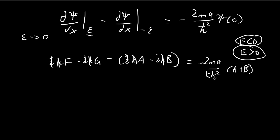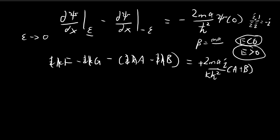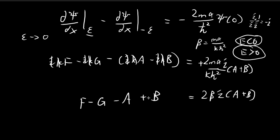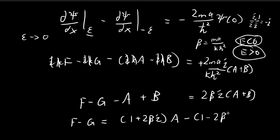Dividing through by k and then by i (noting that 1/i = −i), we define a constant beta equal to m·alpha divided by k·h-bar squared. This simplifies the expression. On the right-hand side we get 2·beta·i times (A + B), and on the left-hand side we have F minus G minus (A minus B). Rearranging and grouping like terms, we arrive at: F minus G = (1 + 2·beta·i)·A minus (1 − ... wait, let me group correctly) — specifically, F minus G equals (1 + 2·beta·i)·A minus (1 + 2·beta·i - 2)·B, yielding the relation with (1 + 2βi) multiplying A and grouping the B terms.